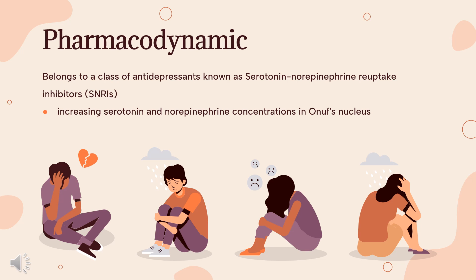Pharmacodynamics: Duloxetine, through increasing serotonin and norepinephrine concentrations in Onuf's nucleus, enhances glutamatergic activation of the pudendal motor nerve, which innervates the external urethral sphincter. This enhanced signaling allows for stronger contraction. Increased contraction of the sphincter increases the pressure needed to produce an incontinence episode in stress urinary incontinence. Duloxetine has been shown to improve patient global impression of improvement and incontinence quality of life scores.